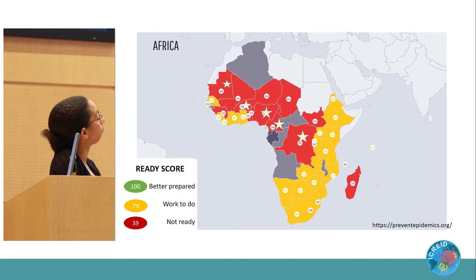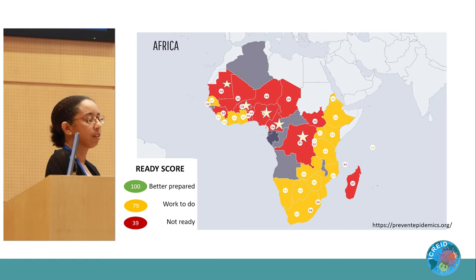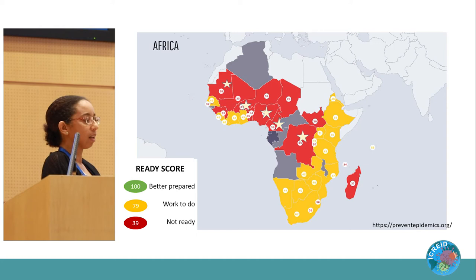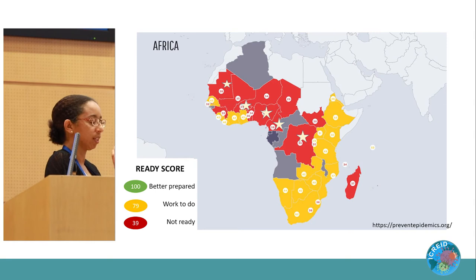Looking at the JEE, Resolve to Prevent Epidemics has developed a RAIDIS score. The JEE evaluates 19 elements with different color-coded scores, and Resolve to Prevent Epidemics has further analyzed and scored them to produce a readiness score at the national level. A green score means the country is better prepared with sustainable and demonstrated capacity. Yellow means capacity is being developed. Red means no capacity is in place.